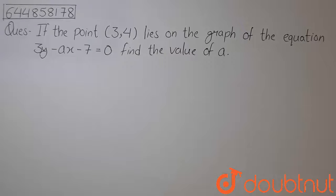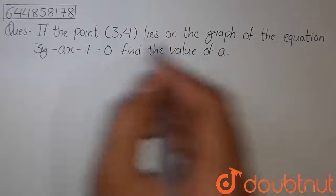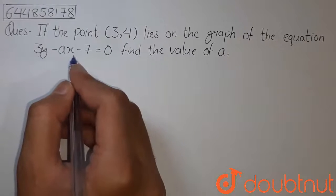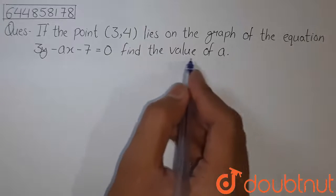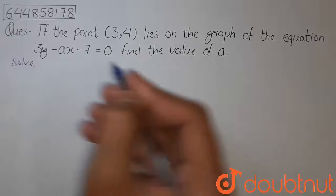The question is: if the point (3,4) lies on the graph of the equation 3y - ax - 7 = 0, then we have to find the value of a. So in this question, suppose the line is represented by 3y - ax - 7 = 0.